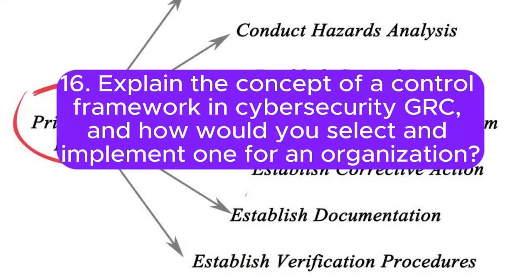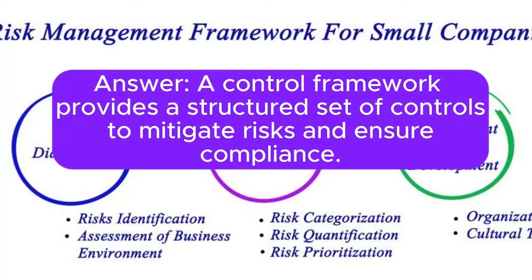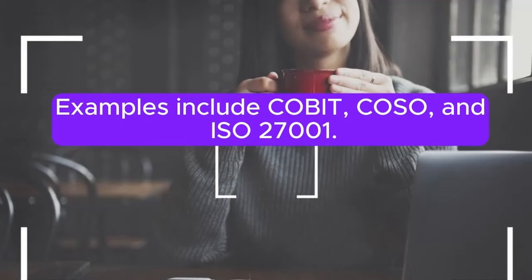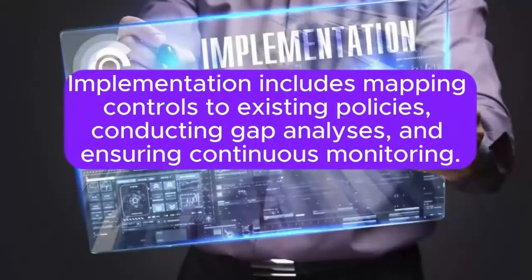Question 16: Explain the concept of a control framework in cybersecurity GRC, and how would you select and implement one for an organization? Answer: A control framework provides a structured set of controls to mitigate risks and ensure compliance. Examples include COBIT, COSO, and ISO 27001. Selection involves understanding organizational goals, industry requirements, and scalability. Implementation includes mapping controls to existing policies, conducting gap analyses, and ensuring continuous monitoring.